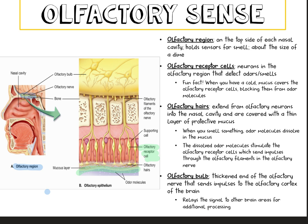The olfactory bulb is the thickened end of the olfactory nerve that sends impulses to the olfactory cortex of the brain and relays the signal to other brain areas for additional processing. In the picture, we see the whole skull, then one side of the nasal cavity, and then a zoom into that olfactory epithelium layer, showing all the different components working to transmit messages to the brain.